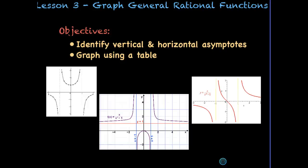Welcome to lesson three: graph general rational functions. Our objectives are to identify the vertical and horizontal asymptotes as guides and then graph our function using a table.